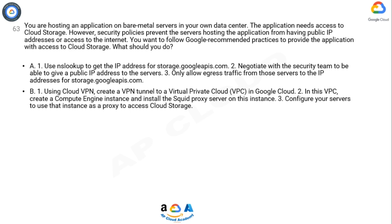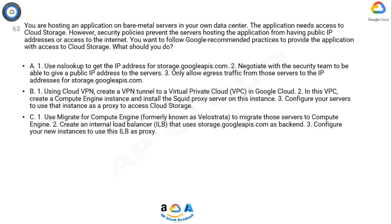Option B: 1) Using Cloud VPN, create a VPN tunnel to a Virtual Private Cloud (VPC) in Google Cloud. 2) In this VPC, create a Compute Engine instance and install the Squid proxy server on this instance. 3) Configure your servers to use that instance as a proxy to access Cloud Storage.